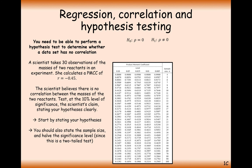Remembering back to AS level stats: with a 10% significance level and a two-tailed test like this one, we need to split the 10% into two lots of 5%. So we're using 5% for the chance of positive correlation and 5% for the chance of negative correlation. With a sample size of 30, we'll use row 30 on the chart.